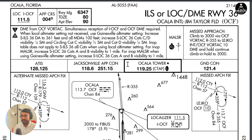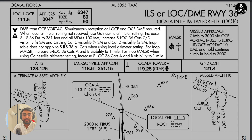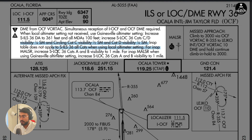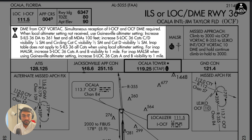The second reason why the inoperative components table might not apply is when the approach chart itself has notes regarding what to do when the approach light system becomes inoperative. Take a look at the Ocala International Jim Taylor Field Airport ILS/LOC/DME runway 36 approach. In the notes section it says: 'Inoperative table does not apply to straight-in ILS 36, all categories, when using local altimeter settings. For inoperative MALSR, increase straight-in localizer 36 Category A and B to one mile.' So if you are flying the localizer and the MALSR is inoperative, you would use the notes — not the inoperative components table.